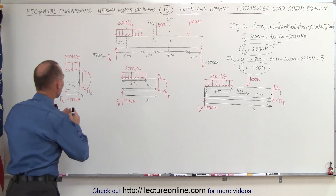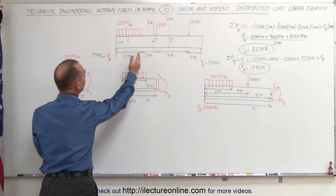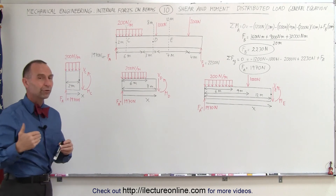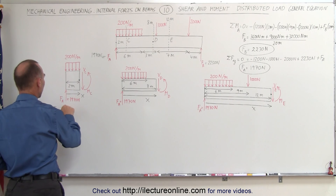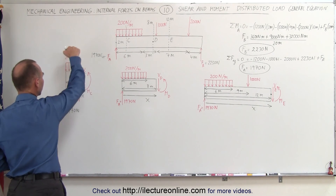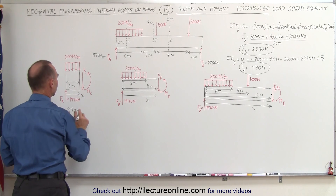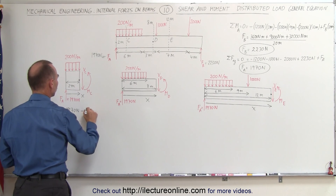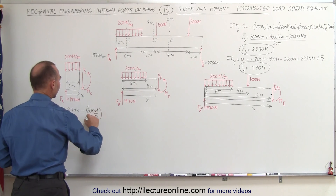Let's do the first section. We're going to find the general equation between 0 and 6 meters for the shear force and for the moment. To get the shear force, we sum up all the forces in the y direction. We have the reaction force at A, which is a positive 1,970 N, and then we have a distributive load force pushing back — that's minus 200 N per meter times x meters.